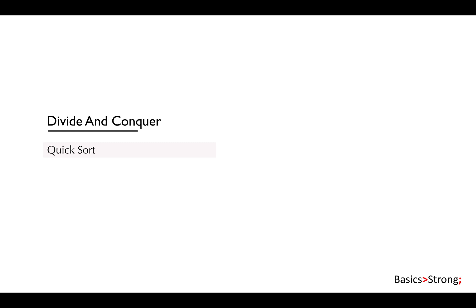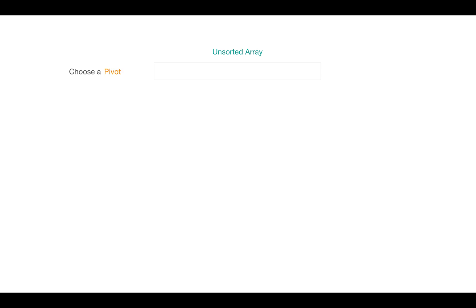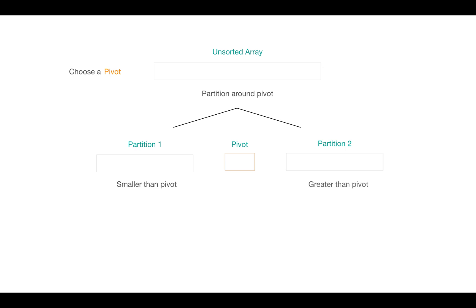In this algorithm we perform sorting by choosing a key element called a pivot, and we partition the unsorted array around this pivot such that all elements smaller than the pivot go to the left and elements greater than the pivot go to the right side. If equal to the pivot, we can move it either side, left or right. Then we continue to choose a pivot and perform partitioning until all elements get sorted.